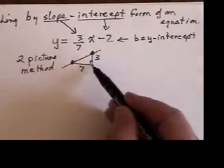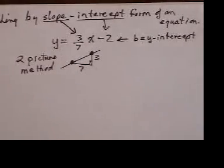Or if I'm at this point, I could go down 3 and to the left 7. So, all I need now is a starting point. And that's where my second picture comes in.